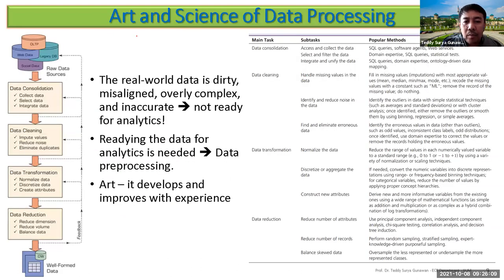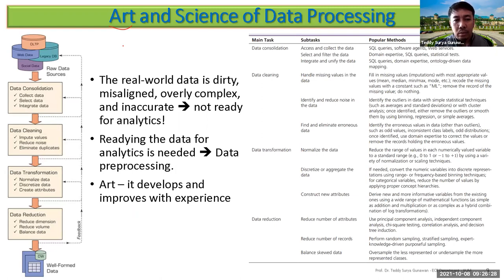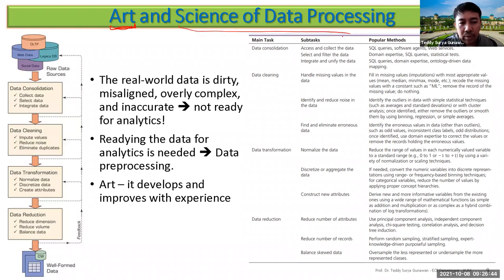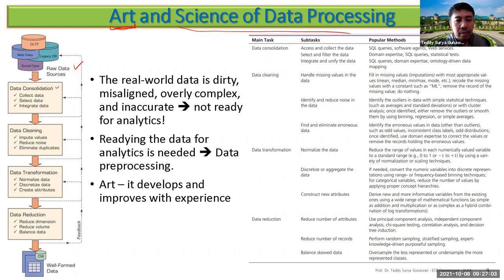The next topic is the art and science of data processing. It is called 'art' because there is some intangible knowledge involved — based on experience, you know which preprocessing steps produce good results for SVM or neural networks. You need 'flying hours' of experience. The fundamentals are: raw data sources from OLTP, web data, legacy databases, social data, audio, video, and text.